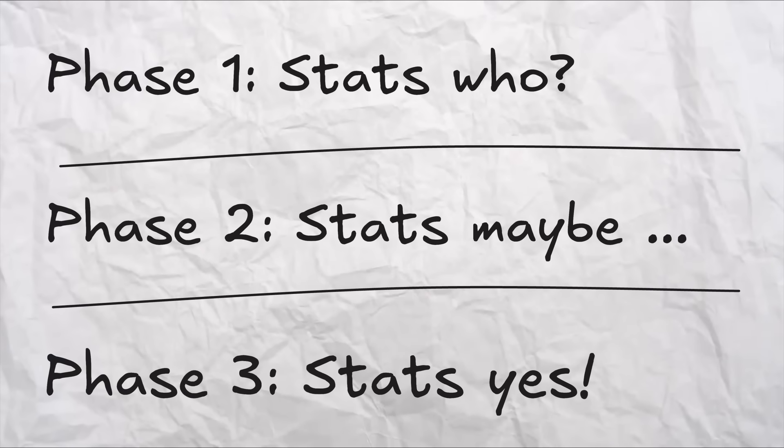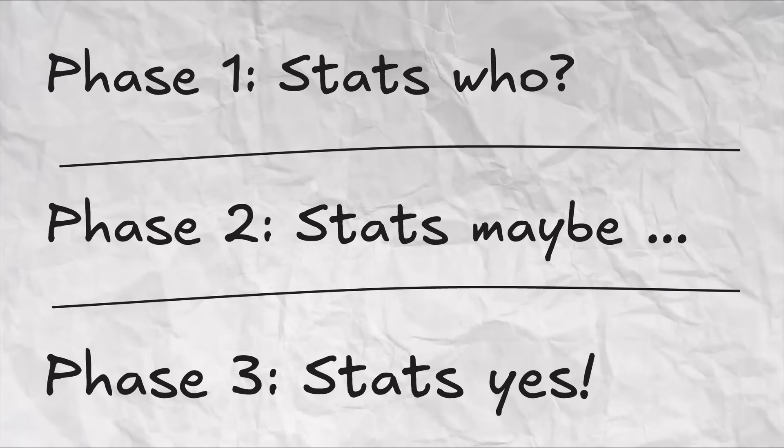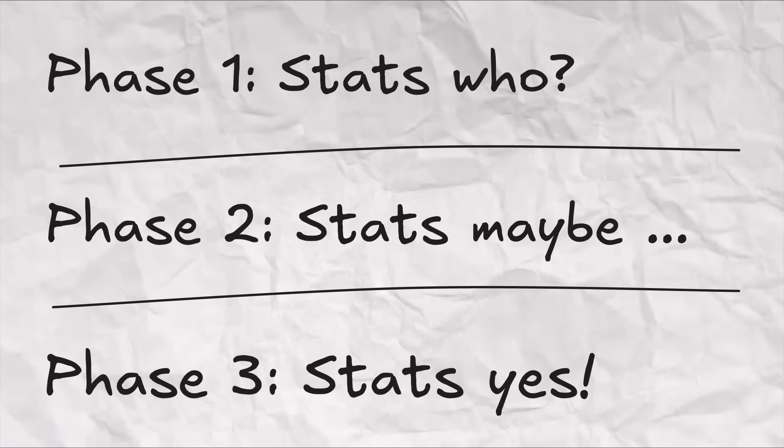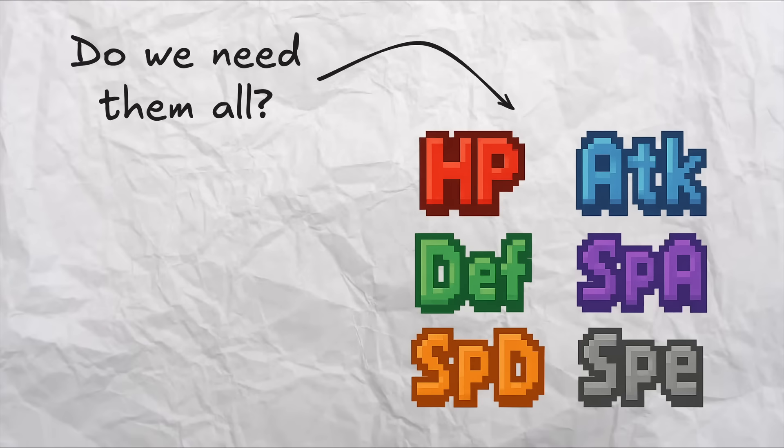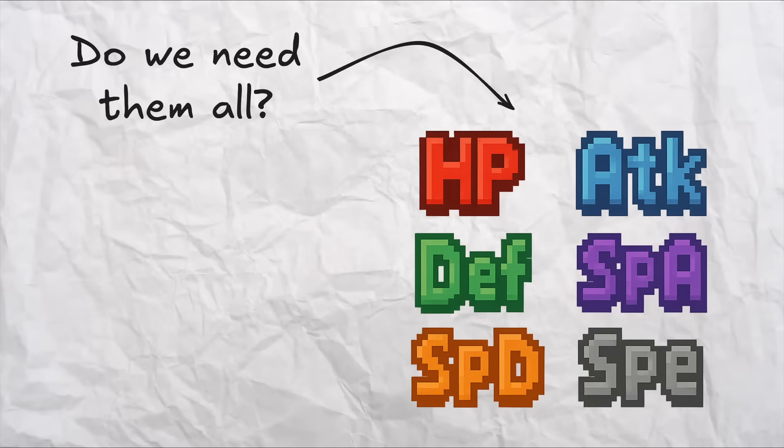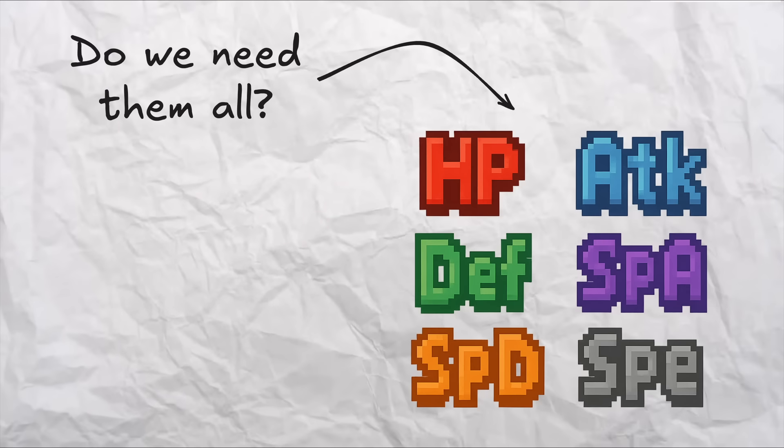In Phase 3, you fully understand that managing your and your opponent's stats are not just helpful, but are make or break to mastering the game. So I guess I'm in Phase 4 now, where you study a bunch of math and then start wondering if we actually need all six of the stats that we have in Pokemon today.